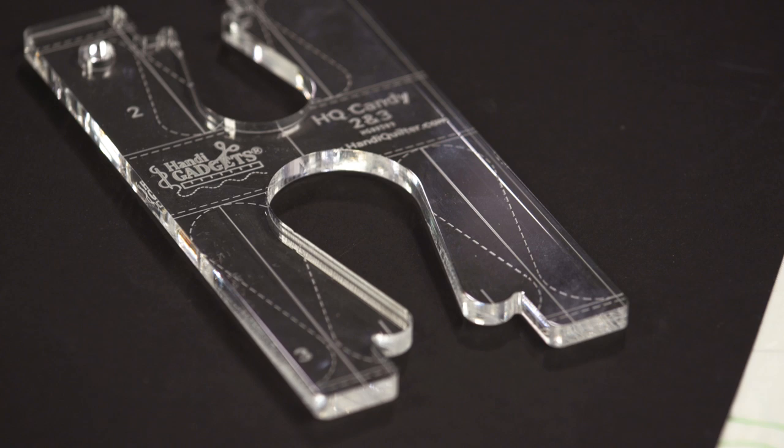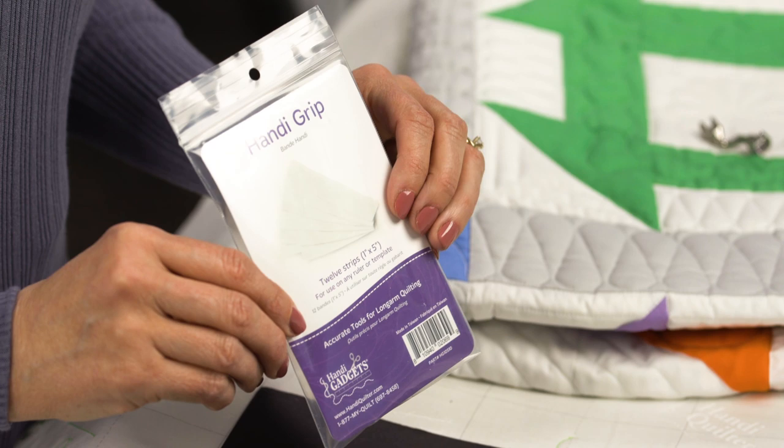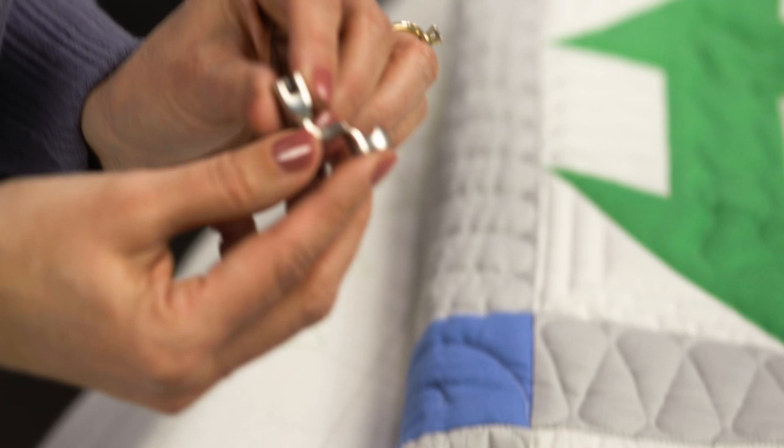Along with the ruler, you'll definitely want to use some Handy Grip to keep this from sliding around, your ruler base, and your sure foot. With the higher profile, it will help prevent the ruler from hopping over.